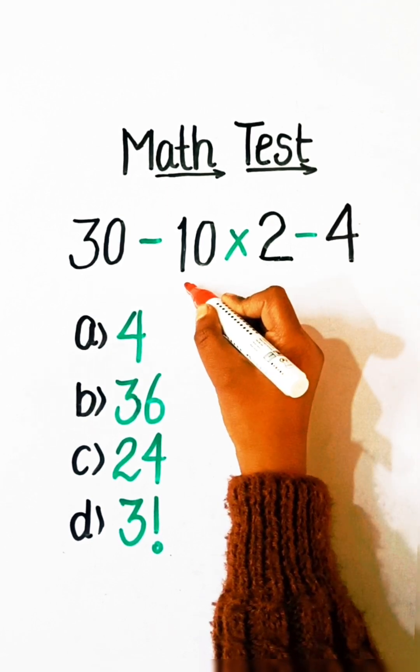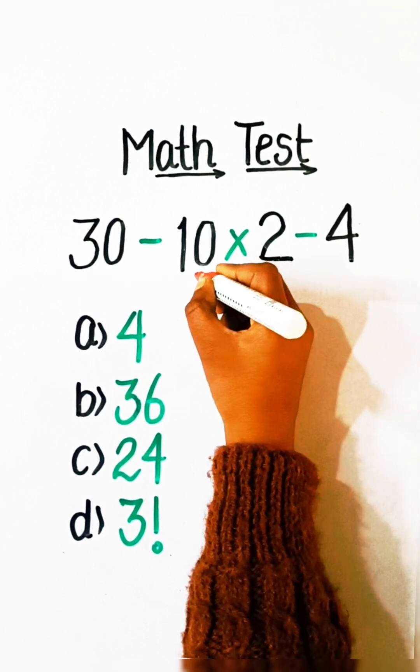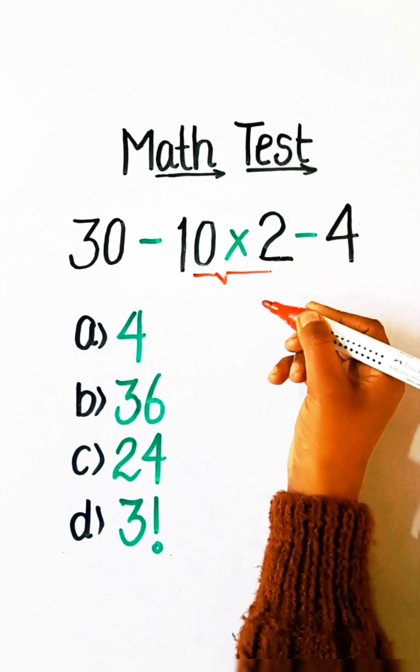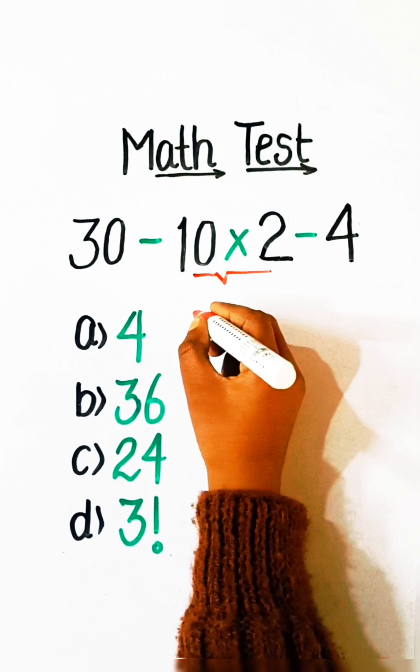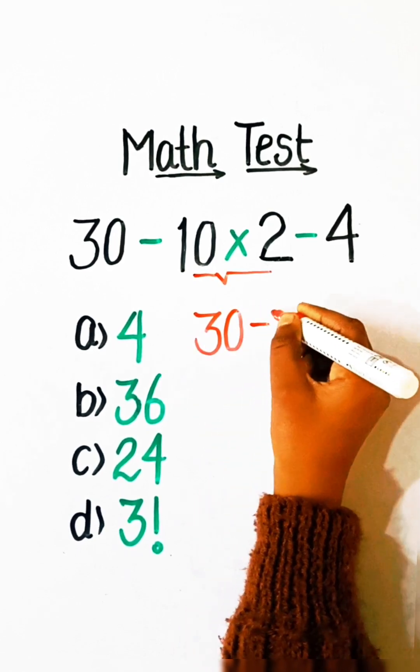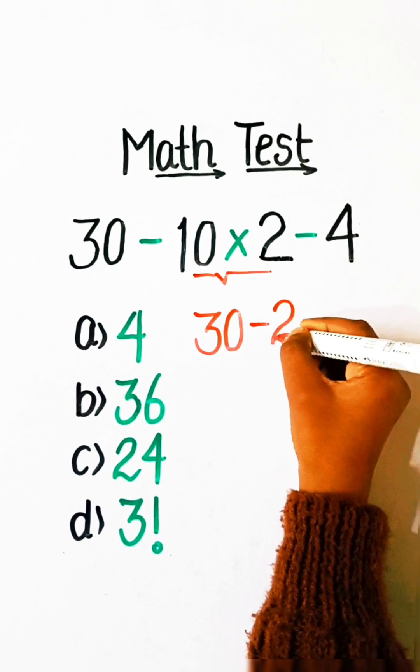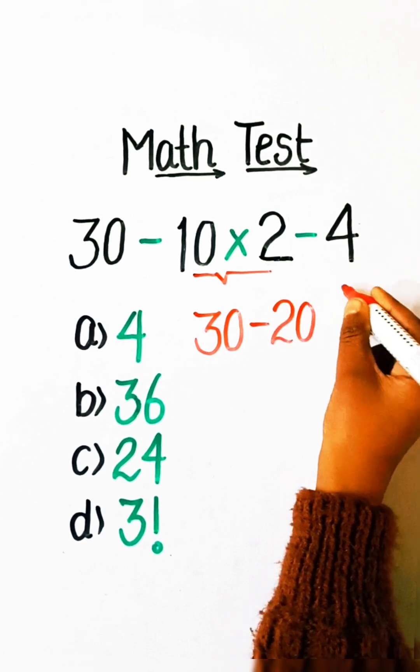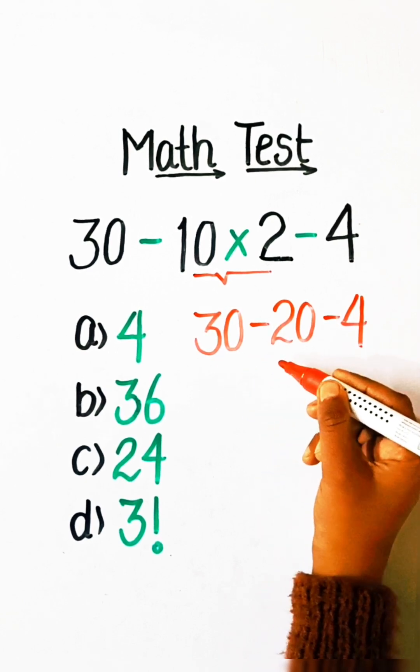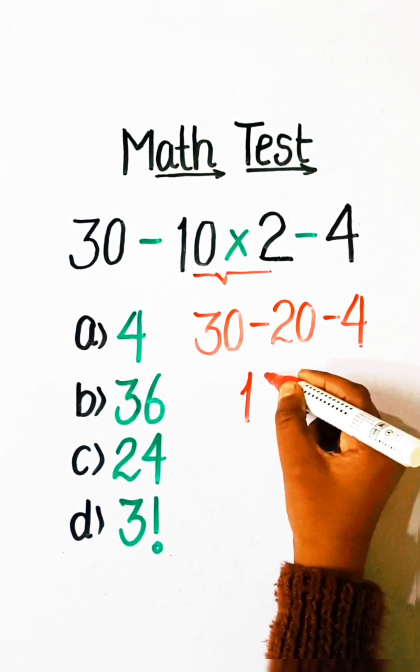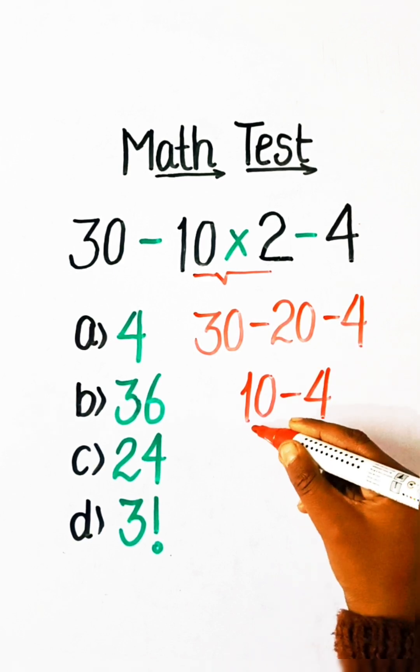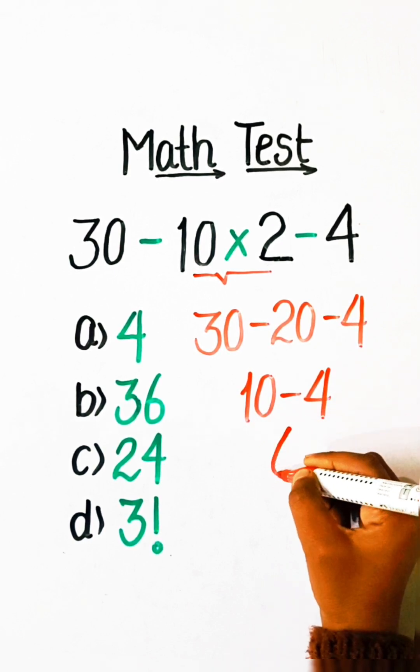So, according to BODMAS, we have to solve the multiplication part first. We will write 30 minus 10 multiplied by 2 is 20, minus 4. 30 minus 20 is 10, minus 4 equals 6.